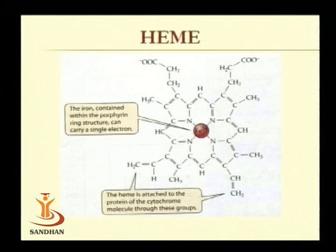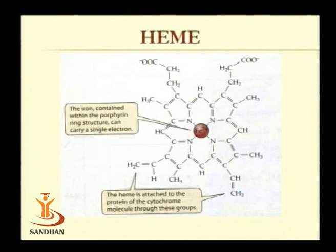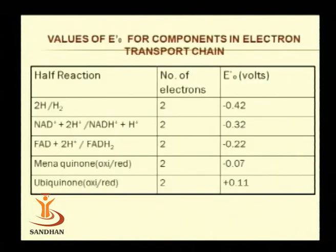Different cytochromes have different structures; they are of various types and differ in their biochemical and spectral properties. Generally, the absorption maxima of cytochrome is between 450 nanometers to 800 nanometers, and molecular weight ranges from thousands to lakhs. This way, we have discussed about various carriers in the electron transport chain.